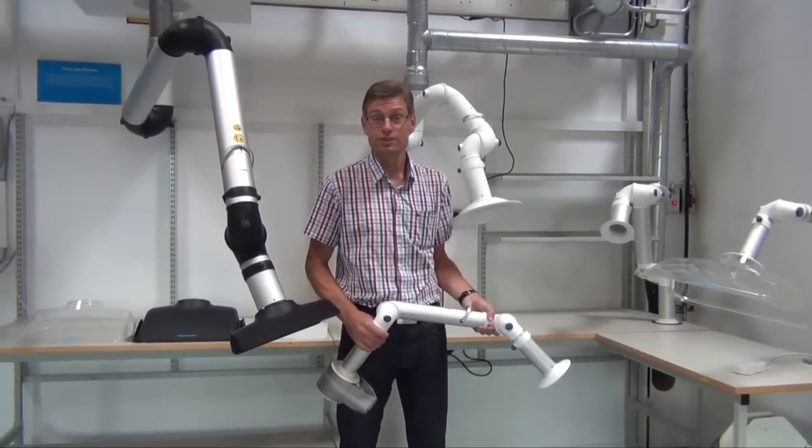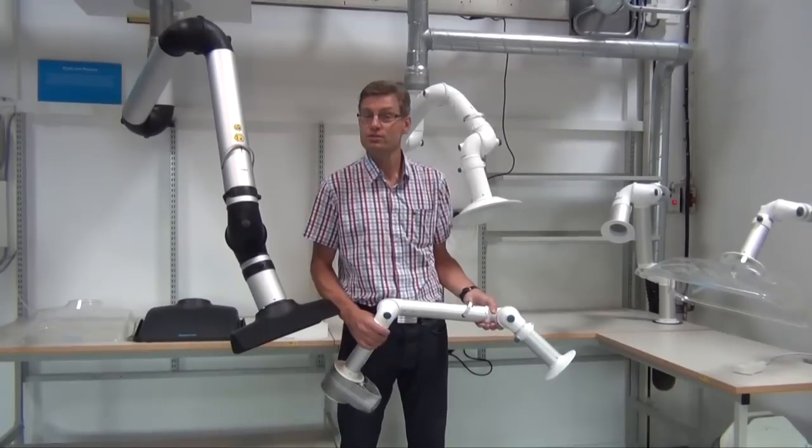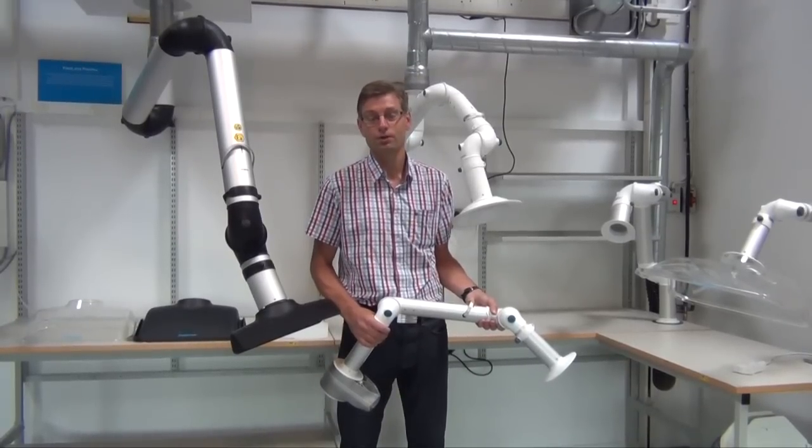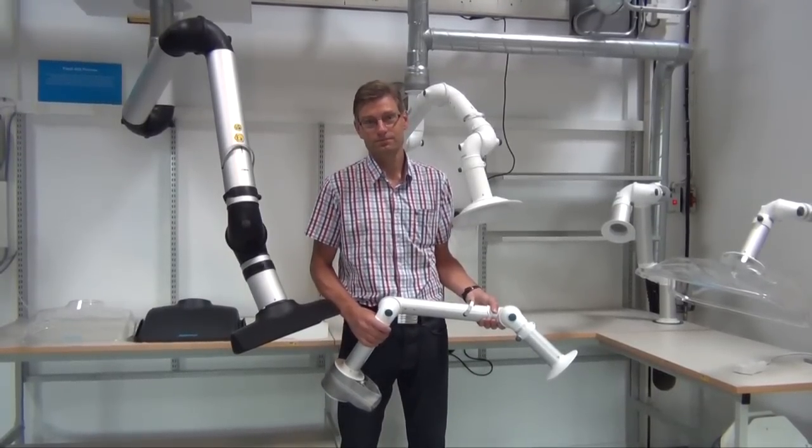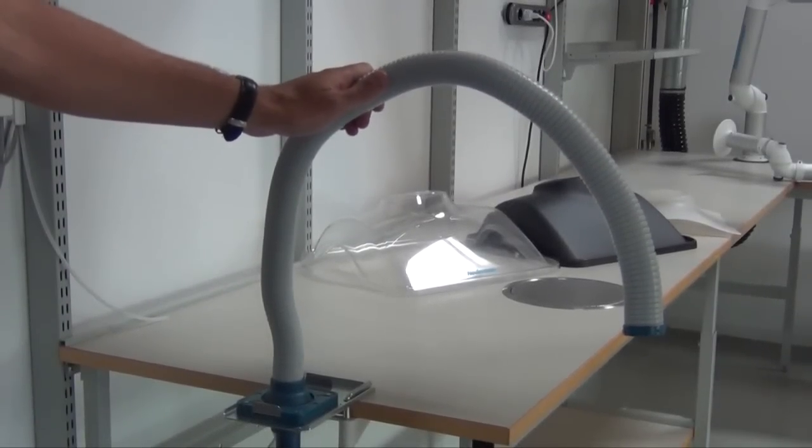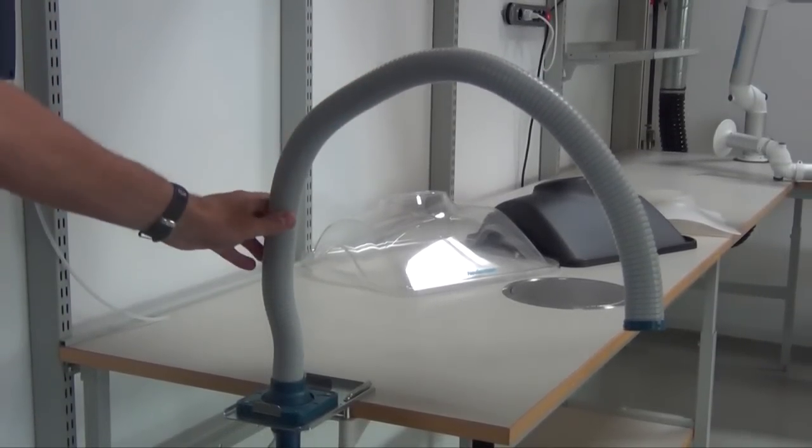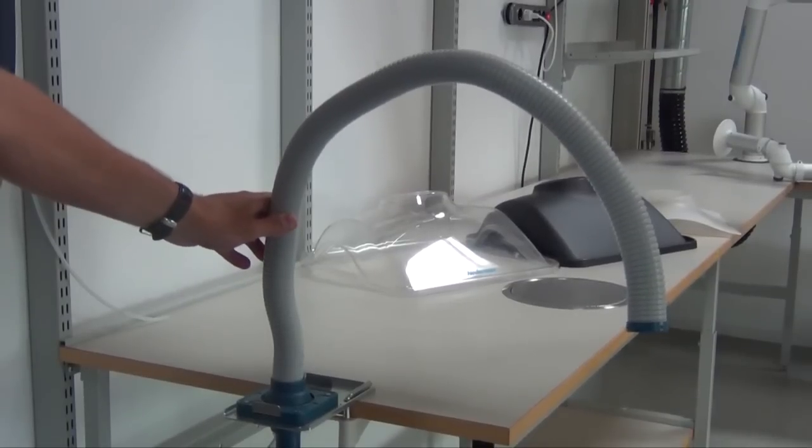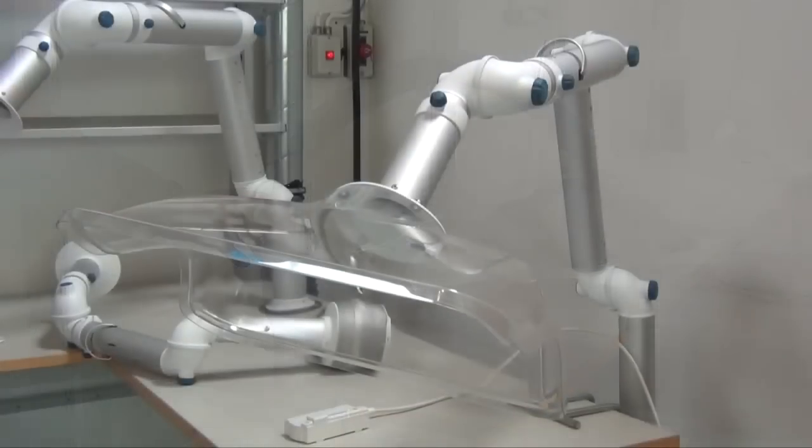I will now make a short introduction to the Nederman Benchtop extraction arms product range. The smallest arm is a 32mm or 1 inch and a quarter self-supporting arm for smaller air flows.